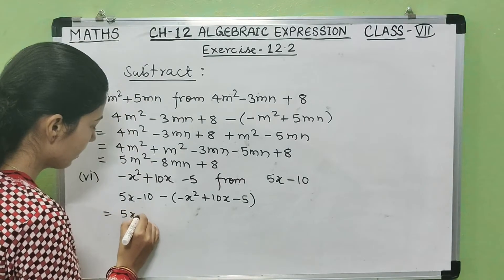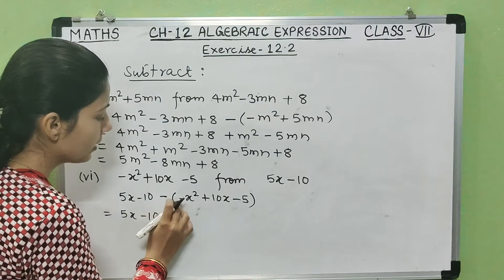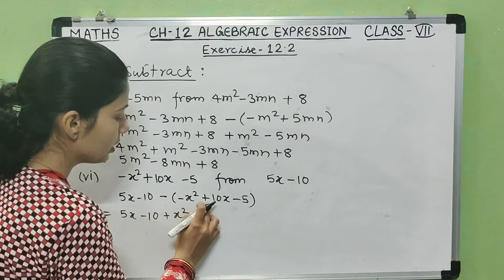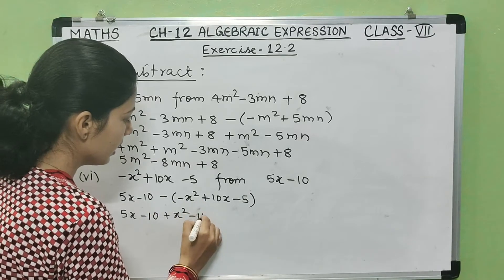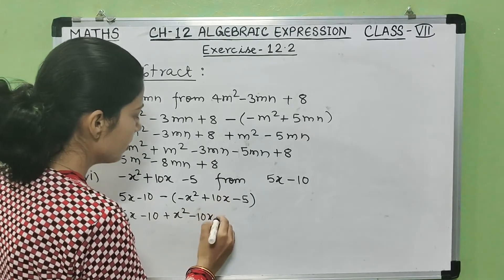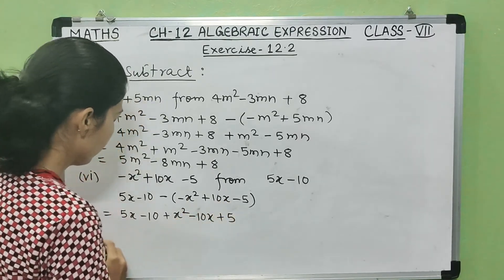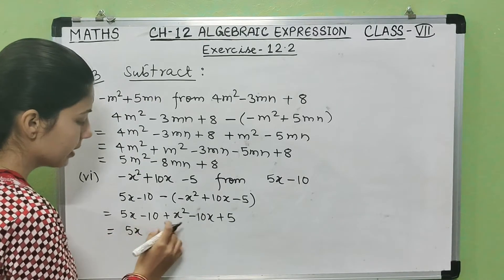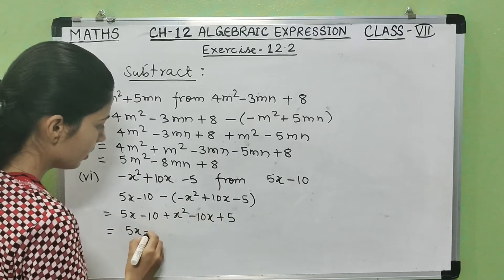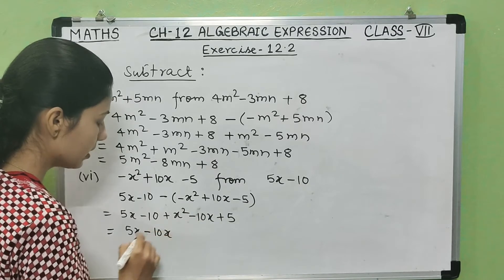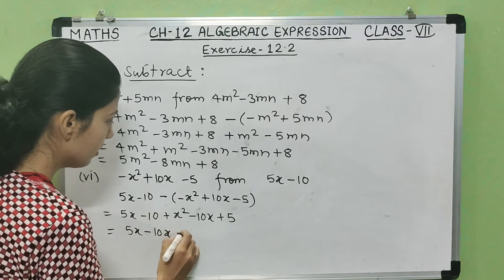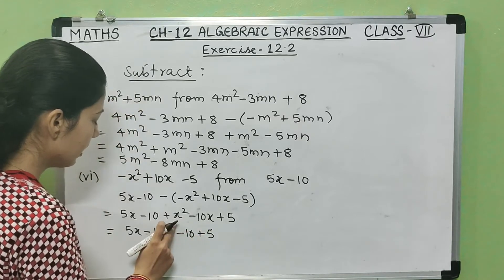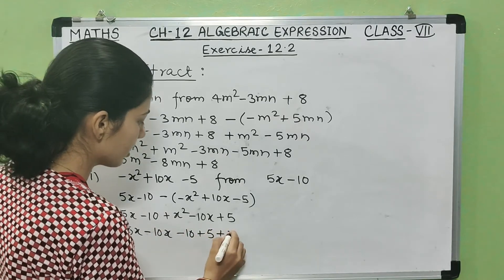So we have: 5x minus 10, then opening the bracket — minus into minus is plus x², minus into plus 10x is minus 10x, minus into minus 5 is plus 5. Now x terms: 5x minus 10x. Constants: minus 10 plus 5. And plus x² stands alone.